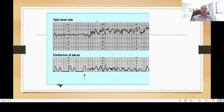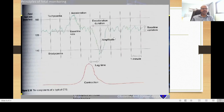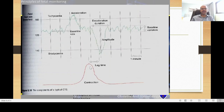The cardiotocogram shows the fetal heart rate alongside uterine contractions. Each point is a uterine contraction, allowing you to see what happens to fetal heart rate with each contraction. The components of a typical CTG include the contraction rate. The fetal heart rate shows a baseline where most heartbeats happen. You have small decelerations and accelerations. Acceleration may be related to fetal movement or may be spontaneous, and the presence of acceleration with fetal movement is a good sign.